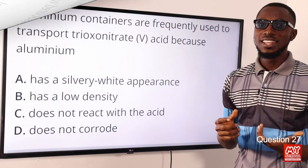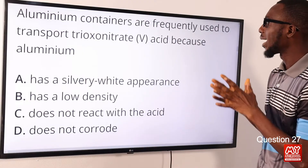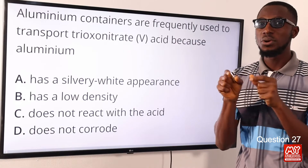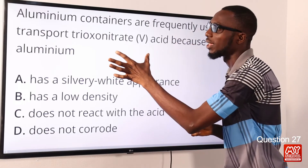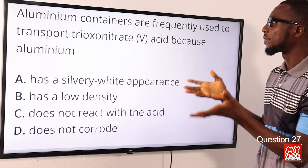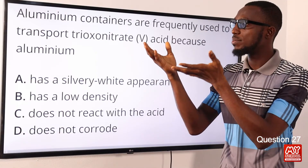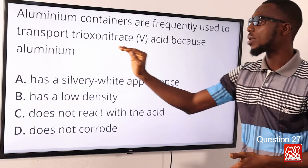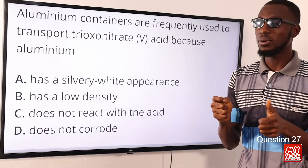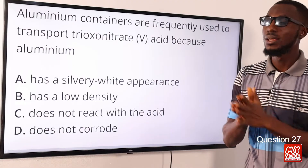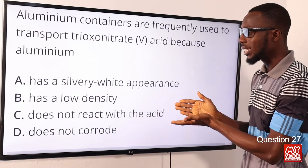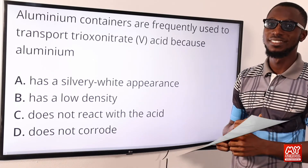Question 27: Aluminium containers are frequently used to transport trioxonitrate(v) acid because aluminium does not react with this particular acid. What aluminium does react with is dilute HCl. Since the aluminium container is being used to transport concentrated nitric acid safely, it is because aluminium does not react with it. The correct option is option C.